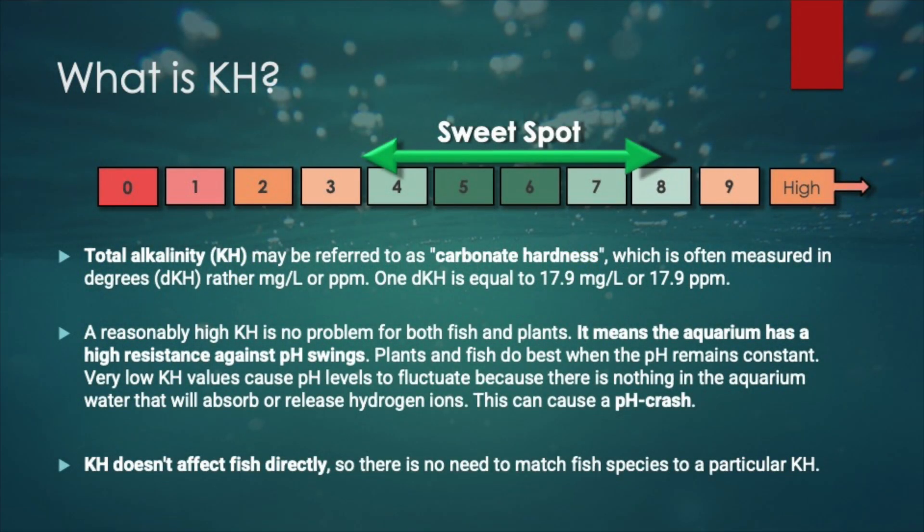The carbonate hardness kH buffers our water against pH swings. This is crucial for the vitality of the inhabitants, as extreme pH swings are lethal. Normally we aim for a level of 4 to 8 dKH, which equals around 70 to 140 ppm. kH doesn't really do anything directly for fish, so keeping it at the desired levels is all you need to take care of.